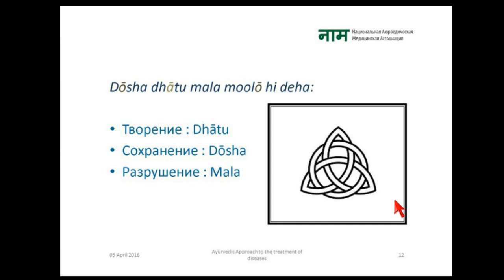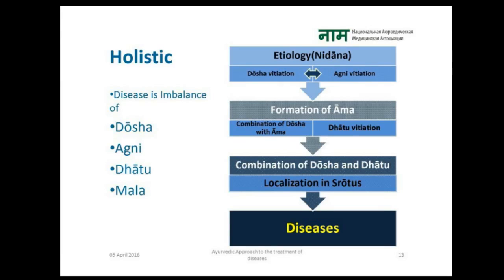These three constituents together form a single integrated structure — this is the basic concept of Holism. You are considered a part of the whole and cannot survive without it. The holistic approach towards disease is based on these basic principles: disease is an imbalance of Doshas, Agni, Dhatu, and Mala.